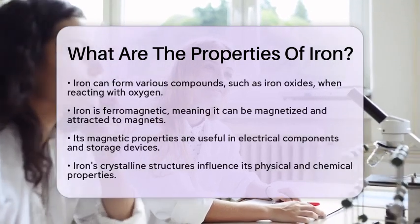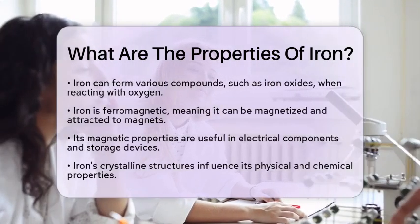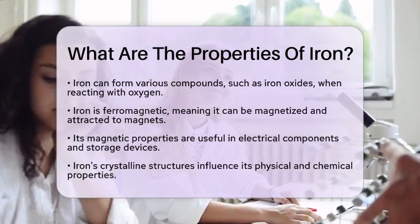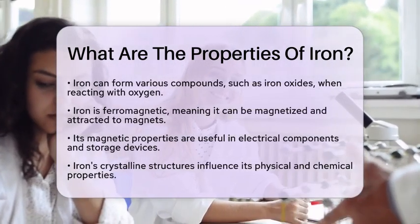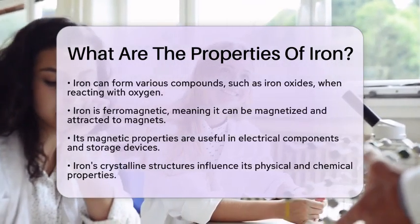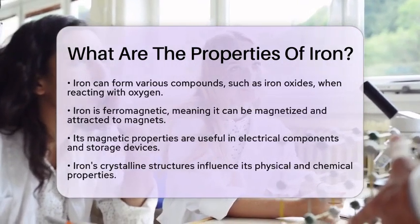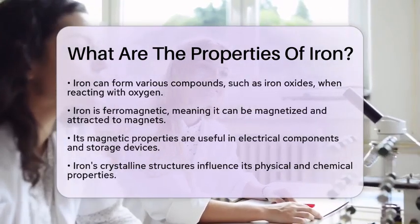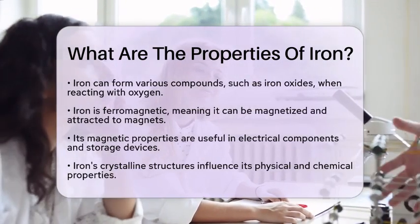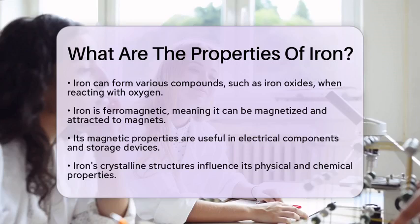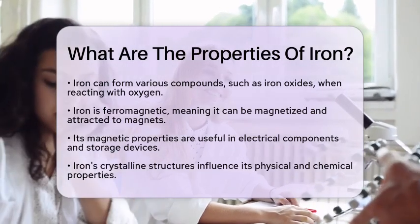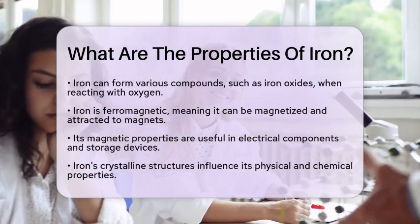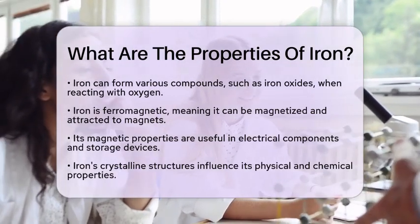Iron is also known for its magnetic properties. It is ferromagnetic, which means it can be magnetized and is attracted to magnets. This characteristic makes iron useful in many applications, including electrical components and magnetic storage devices.